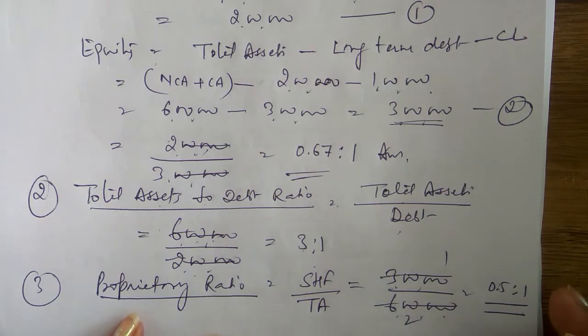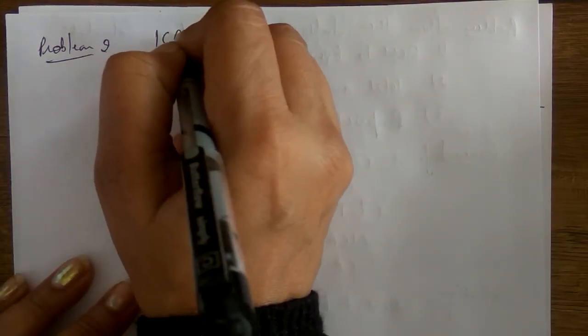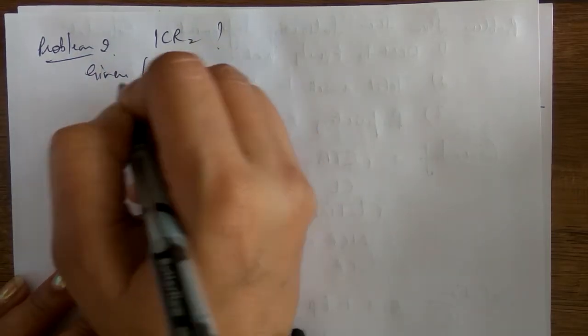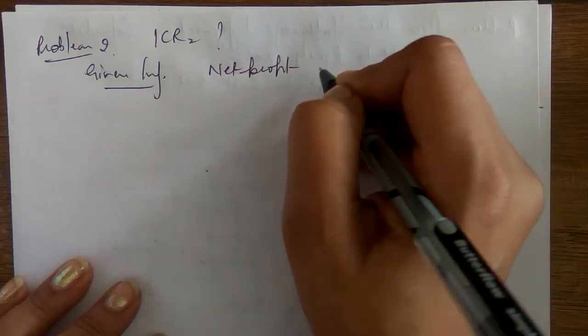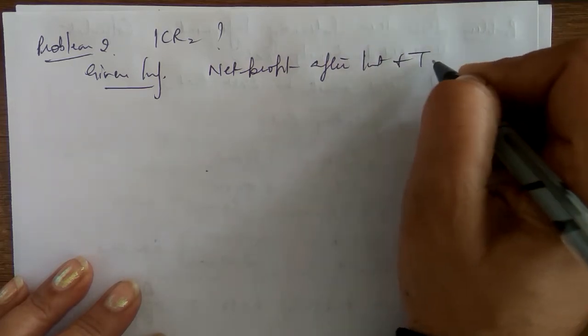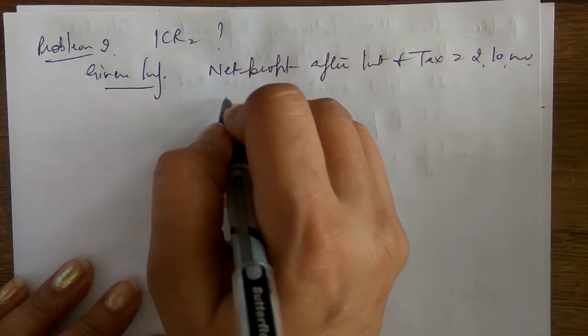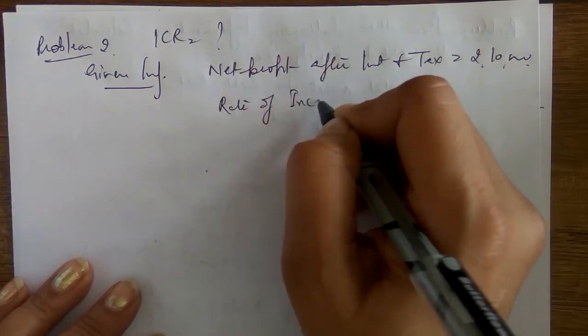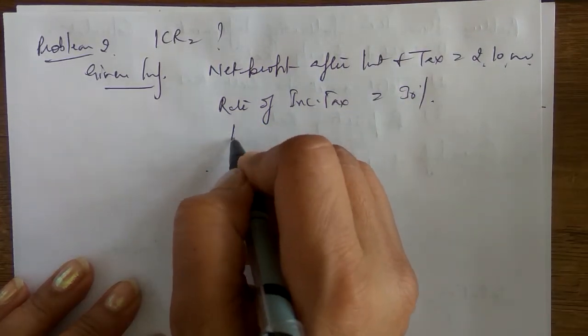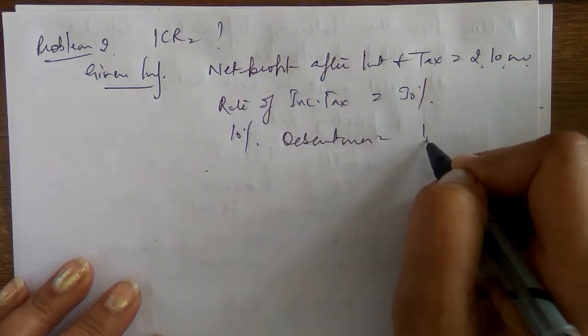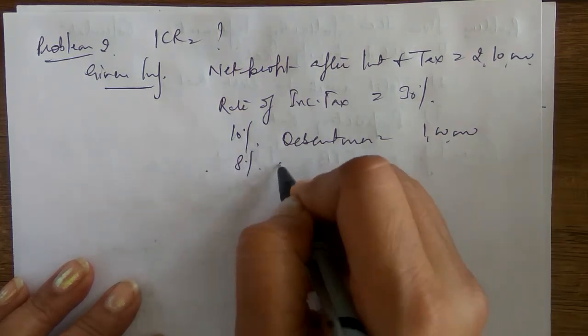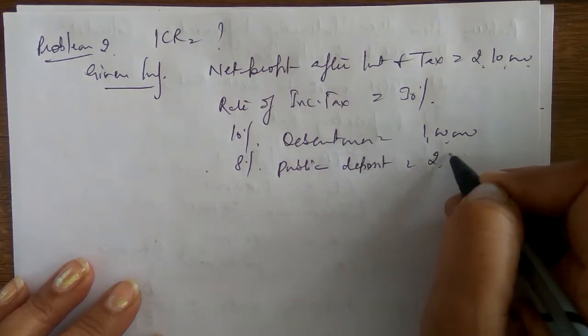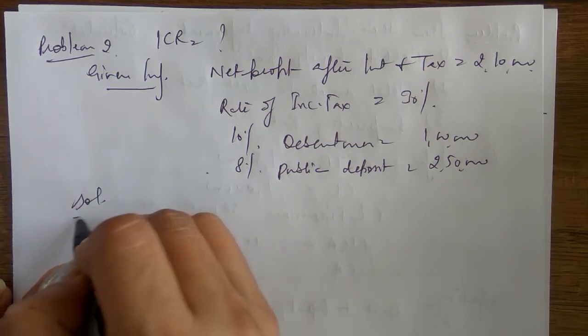This covers the solvency ratios. We still have the interest coverage ratio (ICR). Let's take one problem for ICR. Given: profit after interest and tax = ₹2,10,000; rate of income tax = 30%; 10% debentures = ₹1,00,000; 8% public deposit = ₹2,50,000.